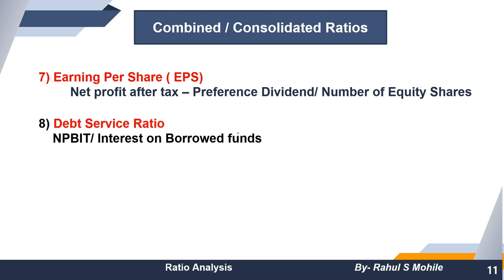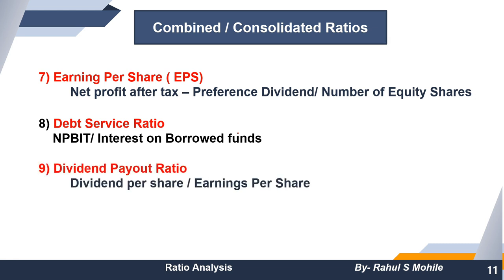Debt service ratio: NPBIT divided by interest on borrowed funds. Dividend payout ratio: dividend per share divided by earning per share (EPS). This tells us what percentage of earnings the company is distributing as dividend. These are the combined ratios, completing the ratio analysis chapter.